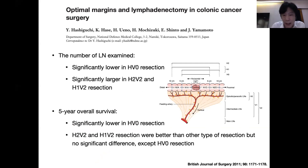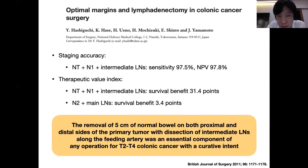Here is the recommendation: removal of five centimeters of normal bowel on both proximal and distal side of the primary tumor with dissection of the intermediate limb — this means standard D2. The feeding artery ligation is essential.